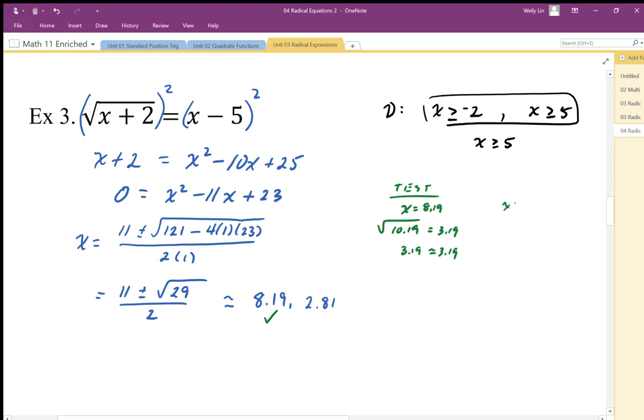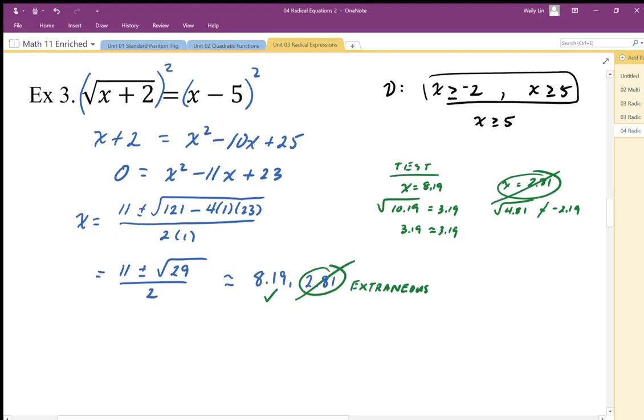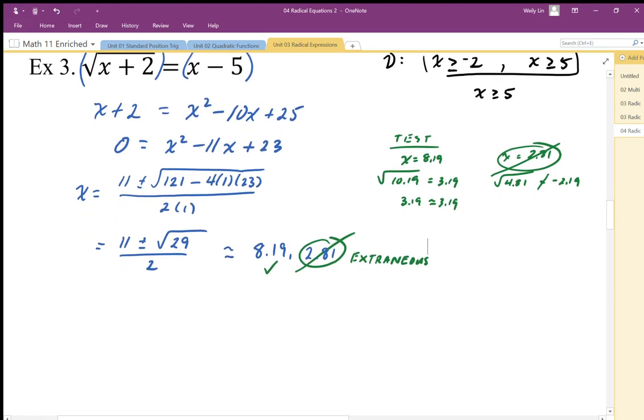When we test 2.81, we're going to end up with square root of 4.81 is equal to negative 2.19. Well, this is clearly not true. This is not equal. This must be an extraneous solution. And again, when we check it against our domain restriction, it is consistent with what our analysis would have been with the domain restriction.